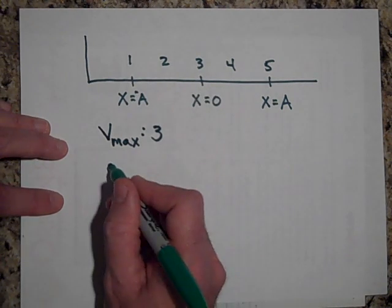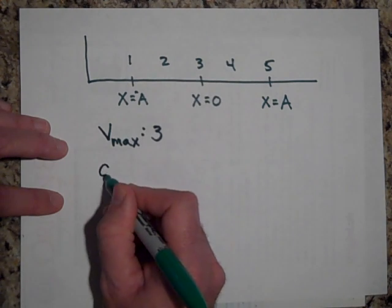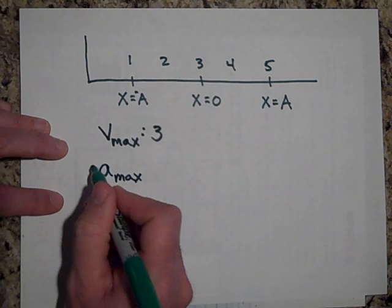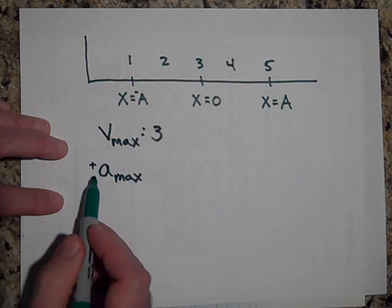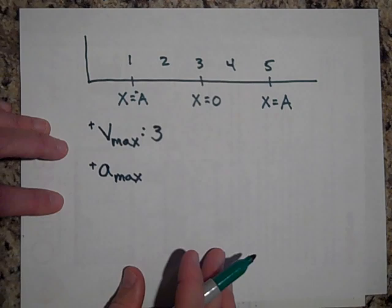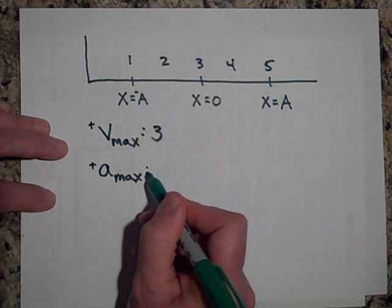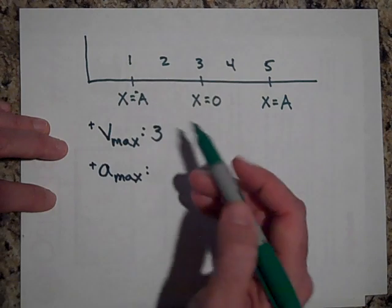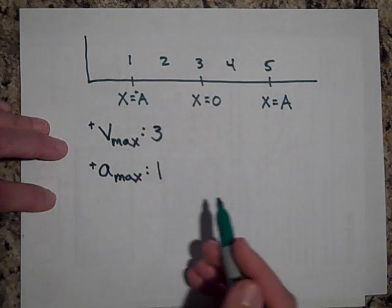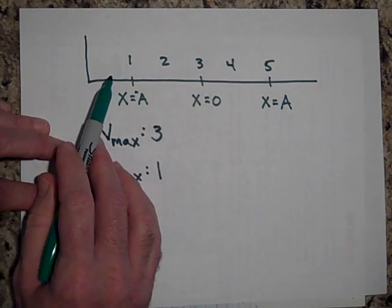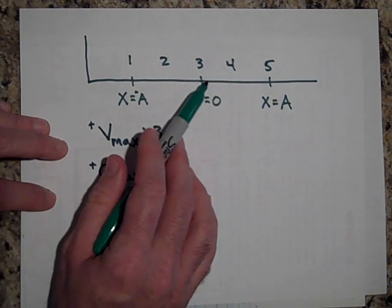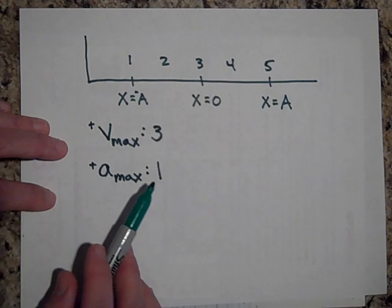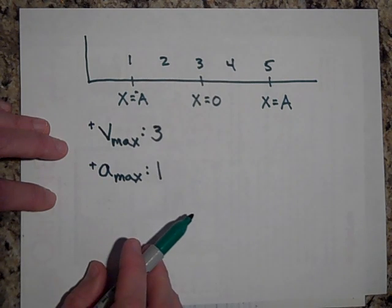Can you tell me where the object will have its biggest acceleration that's positive? Its biggest positive acceleration? That will be at 1. At 1, the spring is crunched up and it's trying to restore it to its equilibrium position, so it's pushing that way, giving it its biggest positive acceleration.